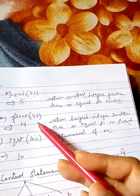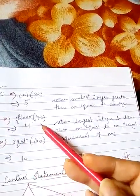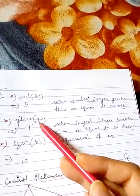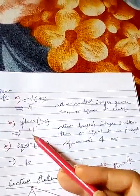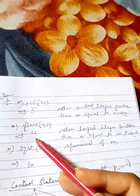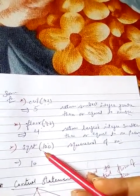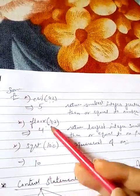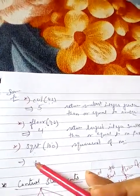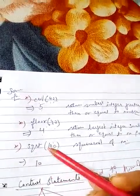Now the next one is floor. It returns the largest integer smaller than or equal to the passing argument. That means floor(4.2) would return 4. Now the next one is sqrt. sqrt(100) - we are calculating here. It would return 10. So these are simply examples of mathematical functions which we import from the math library.